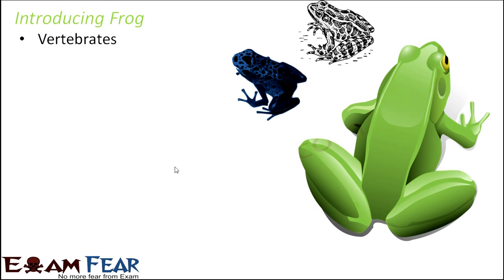Frog falls under the category of vertebrates — those with a vertebral column. These are cold-blooded animals. What do we mean by cold-blooded? Human beings, for example, are warm-blooded animals, meaning our internal body temperature can adapt based on external temperature. Cold-blooded animals, however, cannot regulate their internal temperature based on external temperature. So frogs are cold-blooded animals.